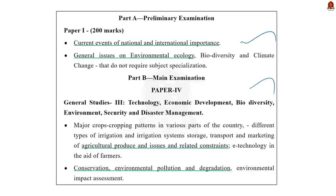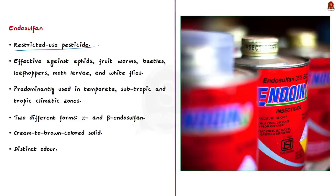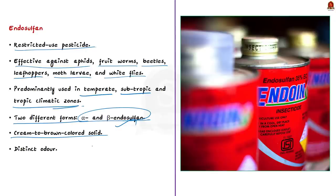Endosulfone is a restricted-use pesticide or insecticide particularly effective against aphids, fruitworms, beetles, leafhoppers, moth larvae and whiteflies, and effective on a wide variety of crops. It is predominantly used in temperate, subtropical and tropical climate zones but is not approved for residential use. Endosulfone is sold as a mixture of two different forms of the same chemical: alpha-endosulfone and beta-endosulfone. Its characteristics: it is a cream to brown colored solid, sometimes crystalline or in flakes, and has a distinct odor similar to turpentine. Endosulfone is a pesticide like any other, but there is a problem with endosulfone due to its specific properties.